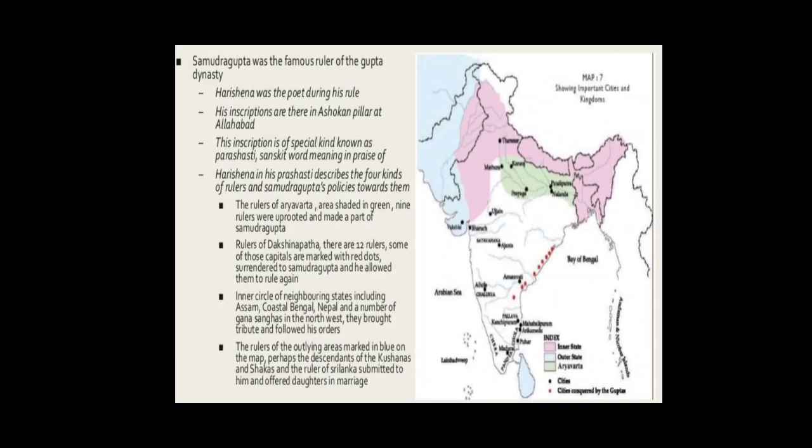Samudragupta's Prashasti. Let us see what Samudragupta's Prashasti tells us. The poet praised the king in glowing terms as a warrior, as a king who won victories in battle, who was learned and the best of poets. He is also described as equal to the gods. The Prashasti was composed in very long sentences.